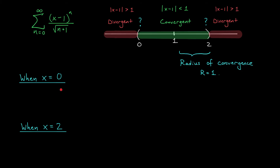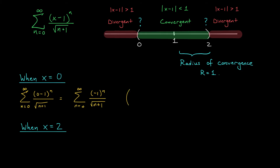Let's see what happens when x = 0. Plugging in gives us the sum from 0 to infinity of (0−1)^n over √(n+1), which simplifies to the sum of (−1)^n over √(n+1). This is an alternating series, and the positive parts 1/√(n+1) are decreasing and tend to 0. So by the alternating series test, this series converges. That means we can include 0 as an endpoint of our interval.